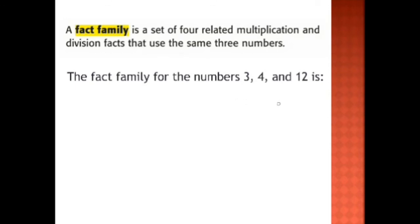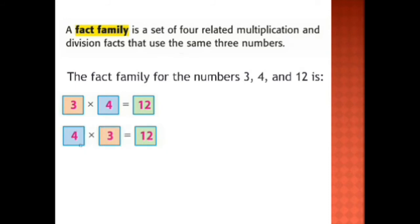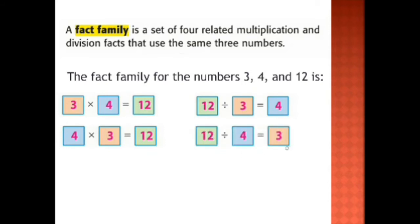They are related by these sentences: we have 3 times 4 equals 12, and of course the vice versa — 4 times 3 equals 12 as well. And using division: 12 divided by 3 equals 4, and 12 divided by 4 equals 3. So we have two multiplication sentences and two division sentences — one, two, three, and four sentences. Two of them are multiplication, two of them are division. These are called the fact family of the numbers 3, 4, and 12.